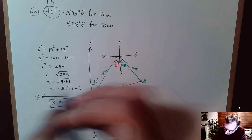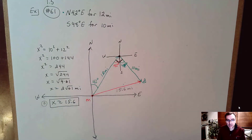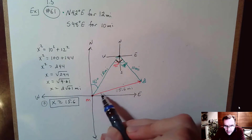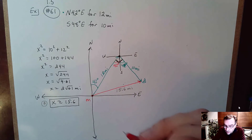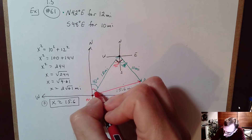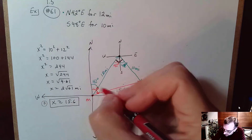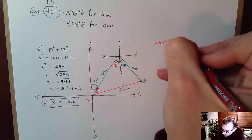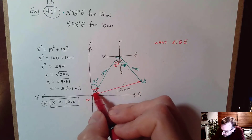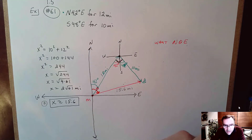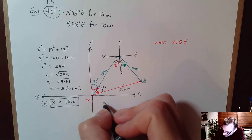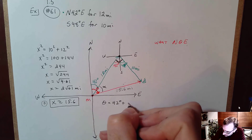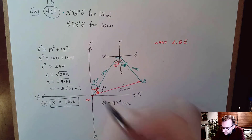The problem also wanted us to find the bearing from the marina. The red arrow is the direction from the marina to the boat. The bearing starts from the north and requires this angle theta. The bearing is north, theta degrees, east. Part of it is already 42 degrees, and I can use trig to find the additional angle alpha. The full bearing angle theta equals 42 degrees plus alpha.